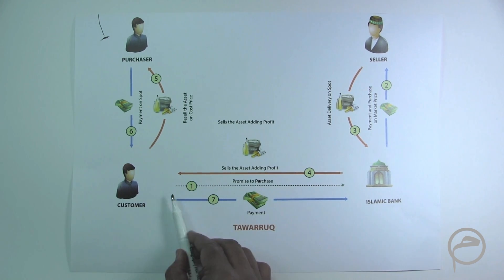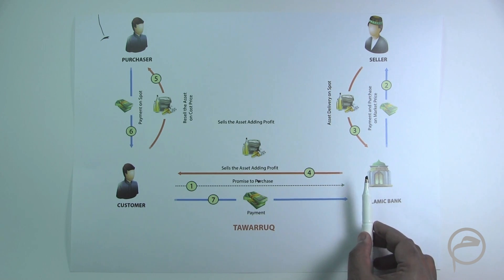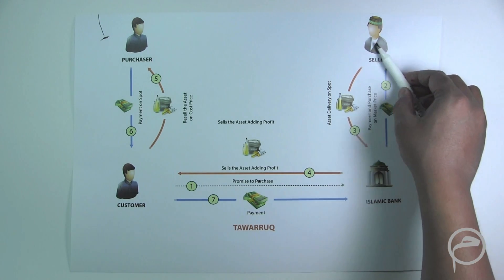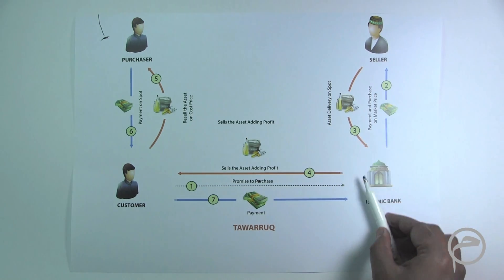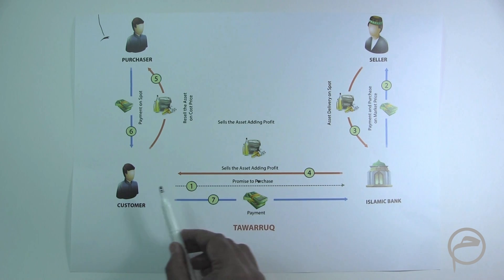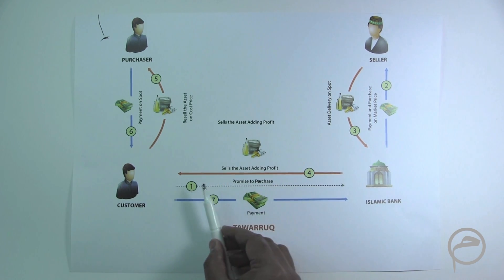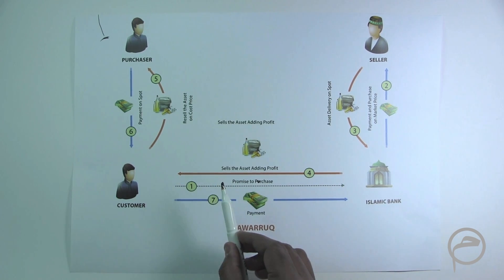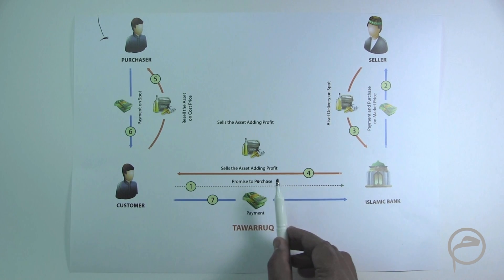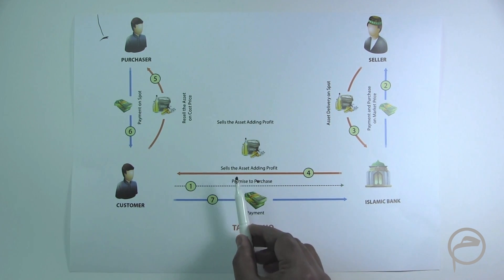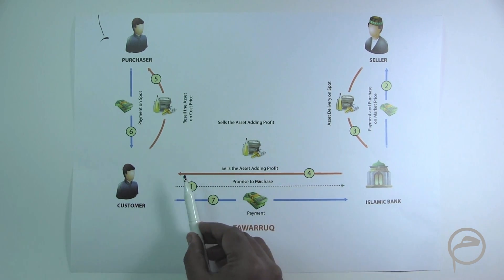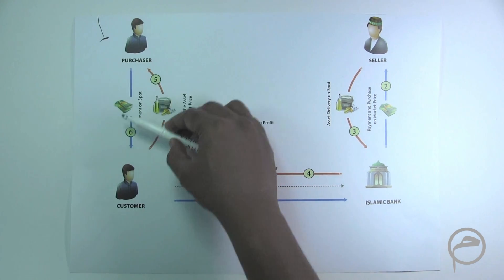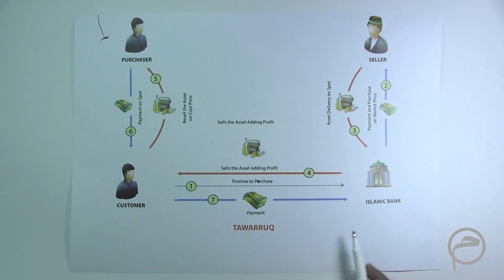In the first step, the customer signs a promise to purchase in favor of the bank. Then the bank purchases certain identified assets from the seller and makes payment. Then the bank sells those identified assets either through a Murabaha contract or a Musawama contract to the customer — meaning either the bank clearly mentions the profit it is making, making it a Murabaha, or it does not explicitly disclose the profit, making it a Musawama. The assets are then transferred to the customer, and the customer sells them to a third-party purchaser and receives the cash. This is, in brief, the Tawarukh transaction.